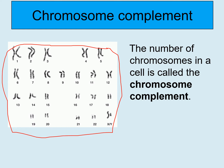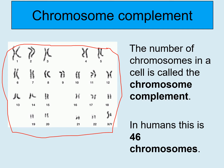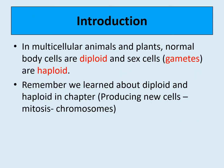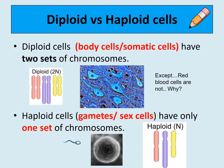The number of chromosomes in a cell is called the chromosome complement and it's different for different organisms. In humans this is 46. In multicellular animals and plants, normal body cells which are also known as somatic cells are diploid, and sex cells which are also known as gametes are haploid. Diploid cells are body cells — also known as somatic cells — and diploid means they have two sets of chromosomes; 'di' meaning two.